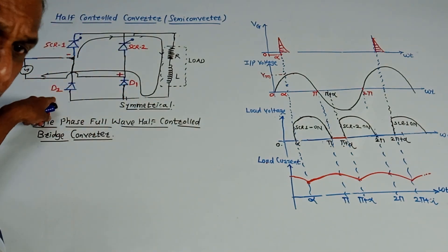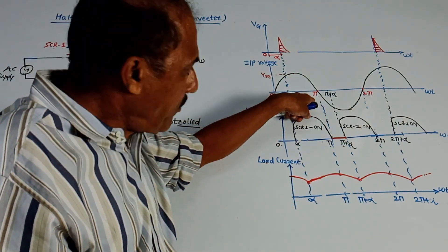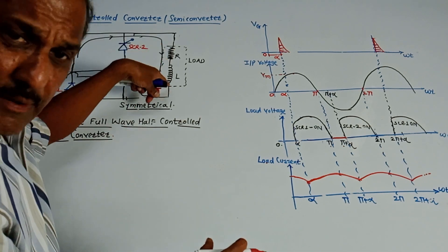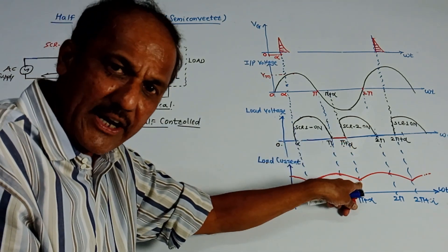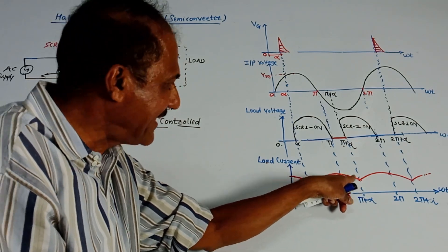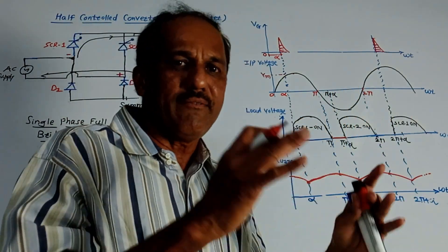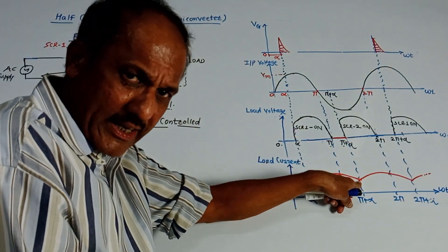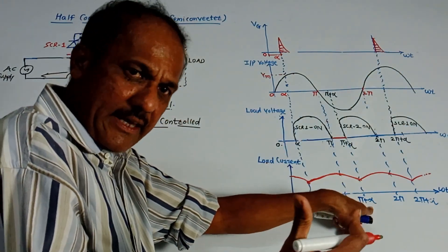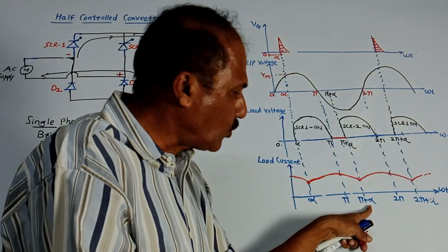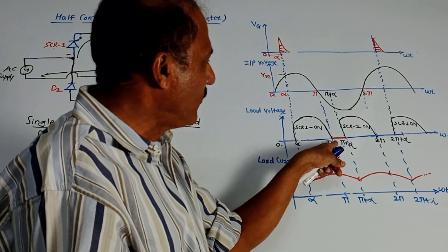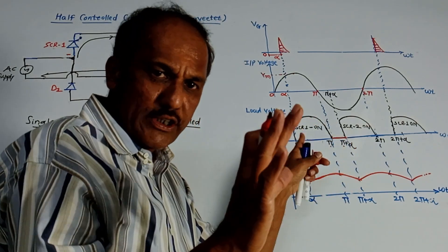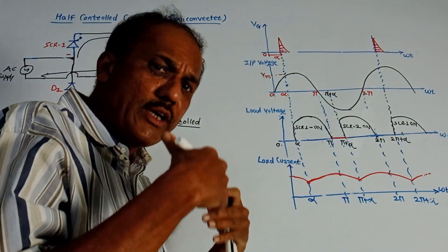Diodes D1 and D2 are freewheeling diodes. During the positive half cycle, after pi, the polarity gets reversed and the circuit will try to switch off the SCR. But due to the action of the freewheeling diode, the load will be short-circuited. Output voltage will be zero and the current will maintain the same direction, so we get current from pi to pi plus alpha. After pi plus alpha, ideally the inductor has dissipated all stored energy, so SCR1 switches off. Between pi and pi plus alpha, load voltage is zero because this acts as a short circuit. This happens during the positive half cycle.